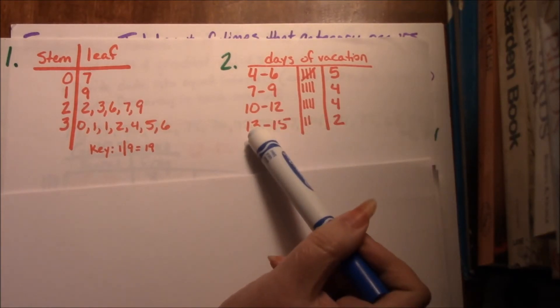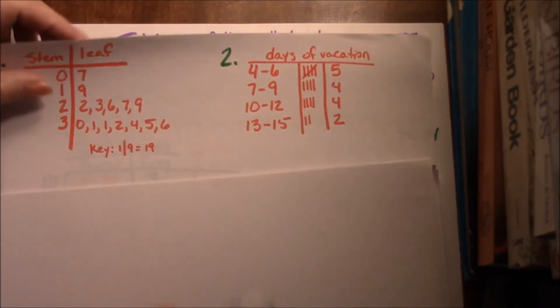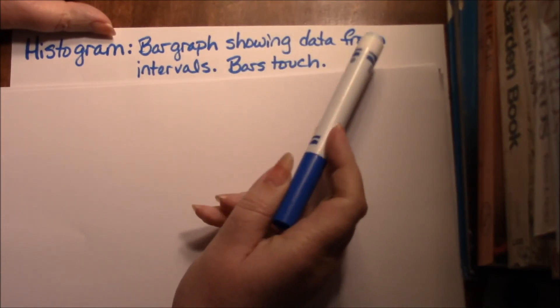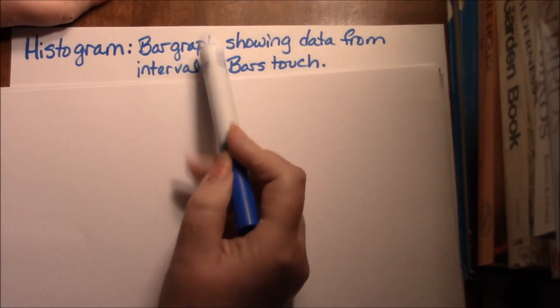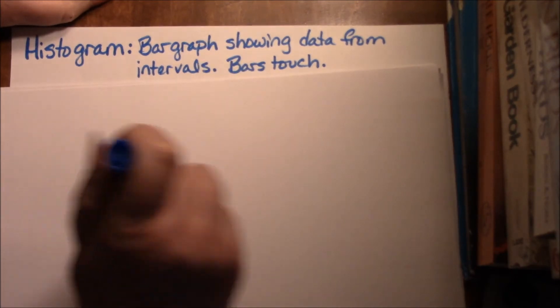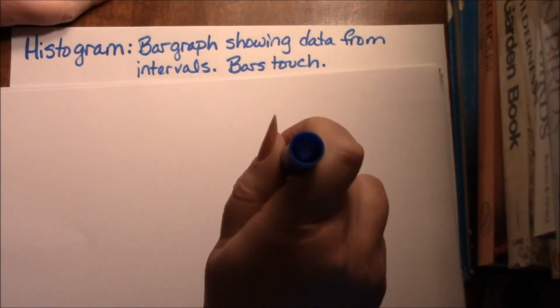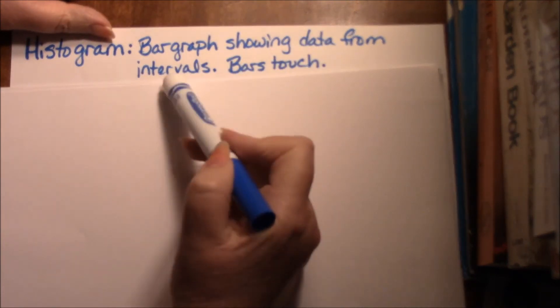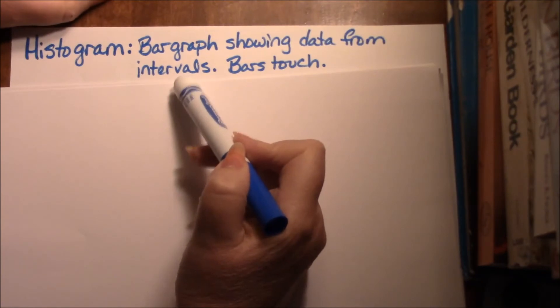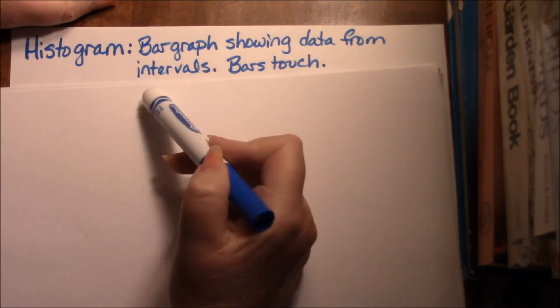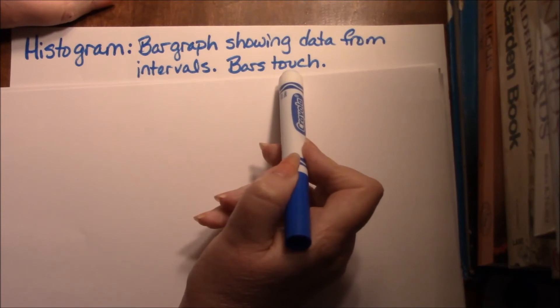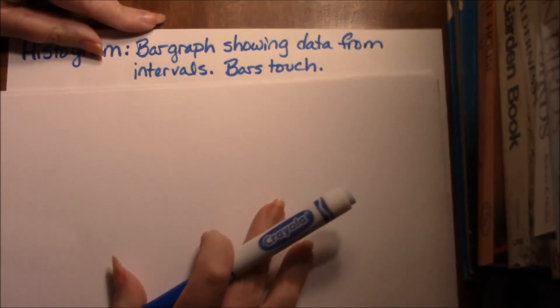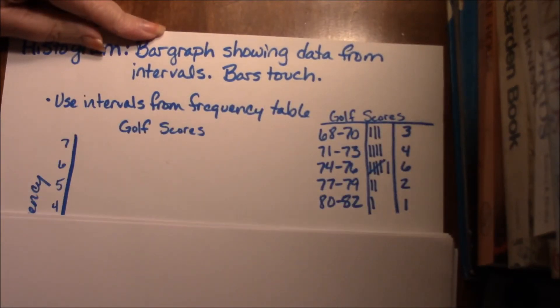Okay, a histogram is a bar graph that shows data from intervals. A regular bar graph shows different categories: hamburger, hot dog, sandwich, that kind of thing. A histogram is a bar graph that shows the data from intervals, and because it's from intervals they all connect, because it's all the same category. How we differentiate them is just the intervals.